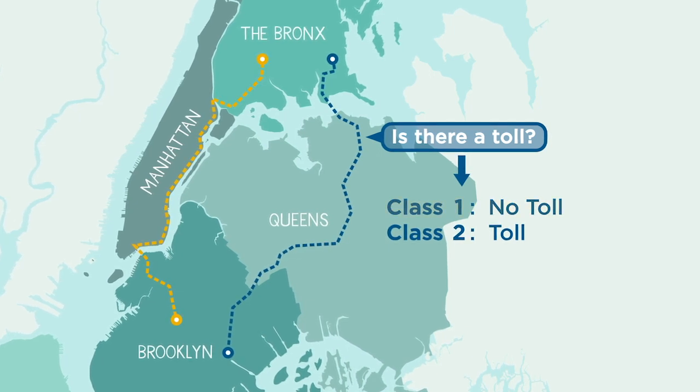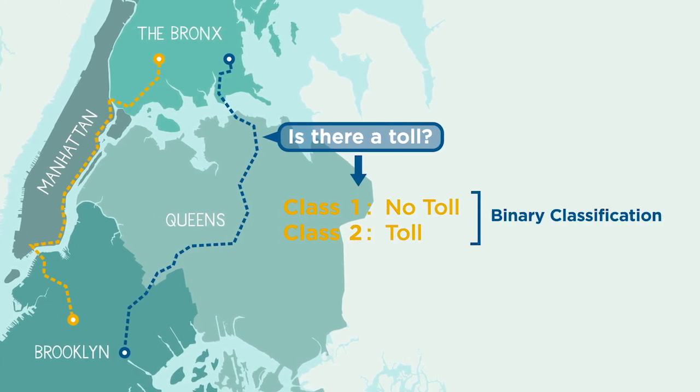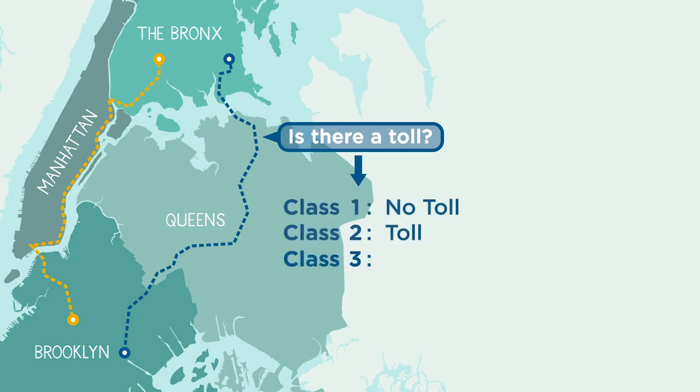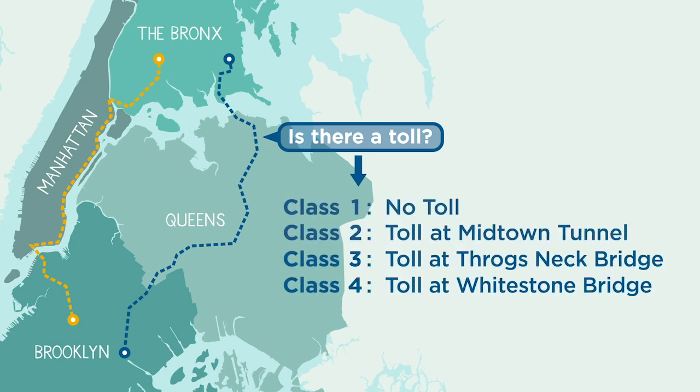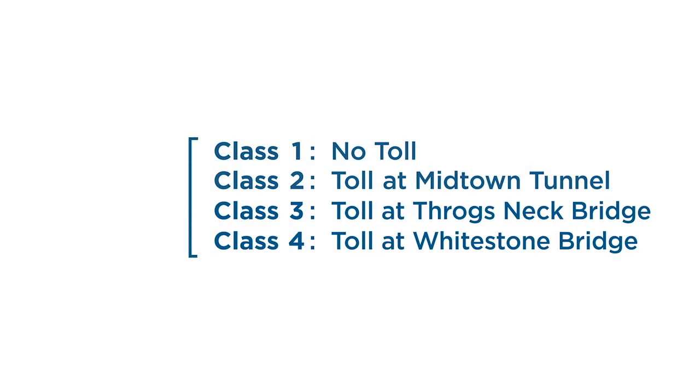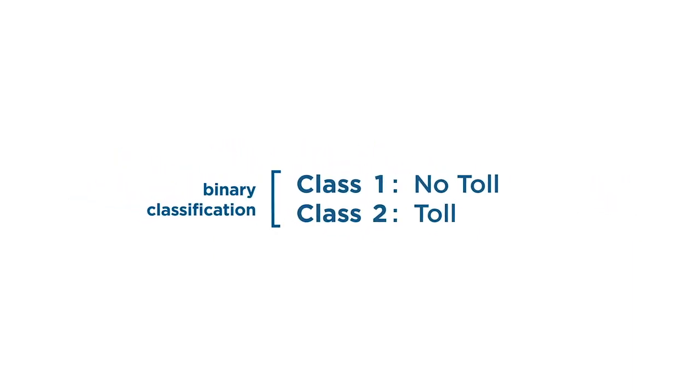In this case, you have two classes, which is known as binary classification, but you can also have a more complicated problem, where you want to identify the source of the toll. Problems with three or more classes are known as multi-class classification. To introduce classification concepts, this video will focus on just binary classification.